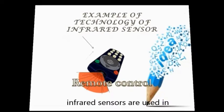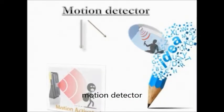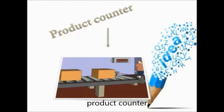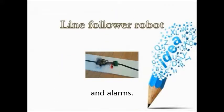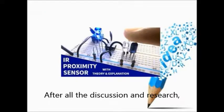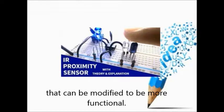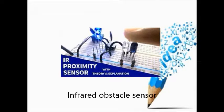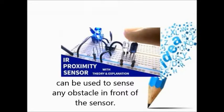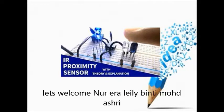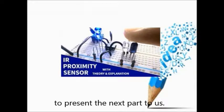Infrared sensors are used in remote control systems, motion detectors, product counters, light follower robots and alarms. After all the discussion and research, we decided to build an infrared obstacle sensor that can be modified to be more functional. Infrared obstacle sensor can be used to sense any obstacle in front of the sensor. So, let's welcome Noh Era Lili Pinti Muhammad Ashri to present the next part to us.